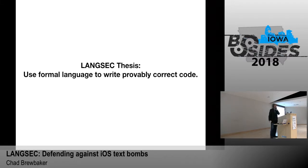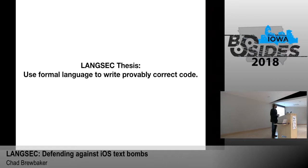The language security thesis is that if we use formal language to write probably correct code, there's not going to be any bugs. Since the 70s in C, we've been very undisciplined about how we write our code in thinking of the different complexity models we're introducing. At each decision we make, try to always default to the least complex model we can use, which makes our code a lot more testable and a lot more safe.